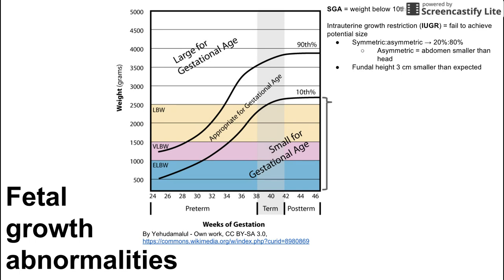One of the definitions of IUGR is when the fundal height is three centimeters smaller than expected. So if the fundal height is supposed to show a 30-week baby but it's really at a 26 or 27-week fundal height, that's one way to diagnose IUGR.